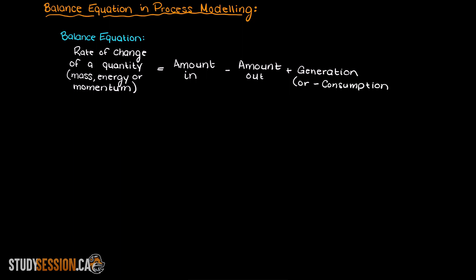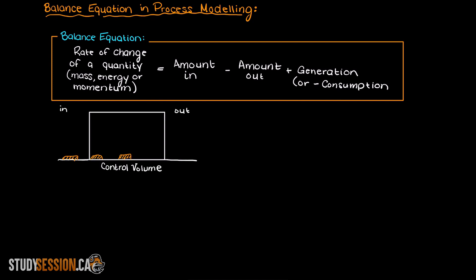The balance equation states that the rate of change of a quantity, whether that is mass, energy, or momentum, is going to equal the amount in minus the amount out plus the generation of that quantity. Let's imagine this box here and some amount of cookies flowing through it. The amount of cookies out of our box is going to equal the amount of cookies in minus the amount of cookies that are taken out of our box plus any cookies that we create within the box.